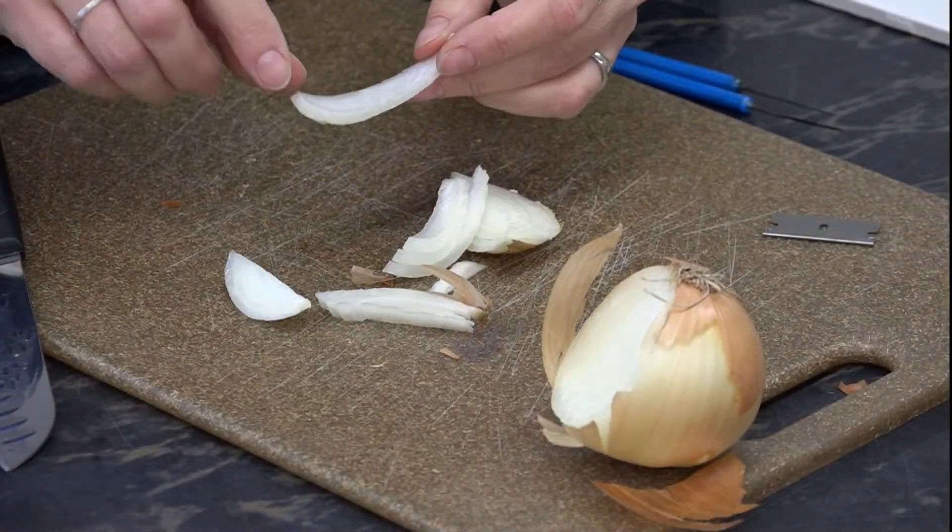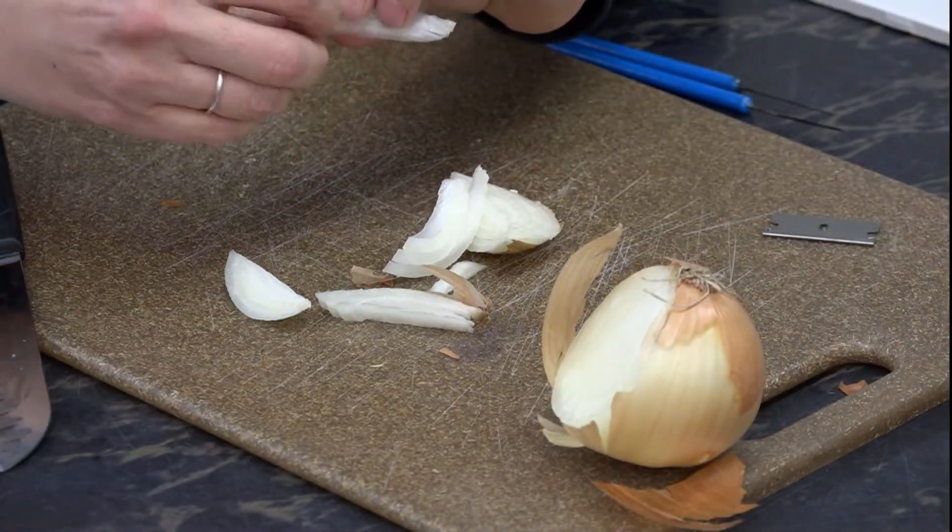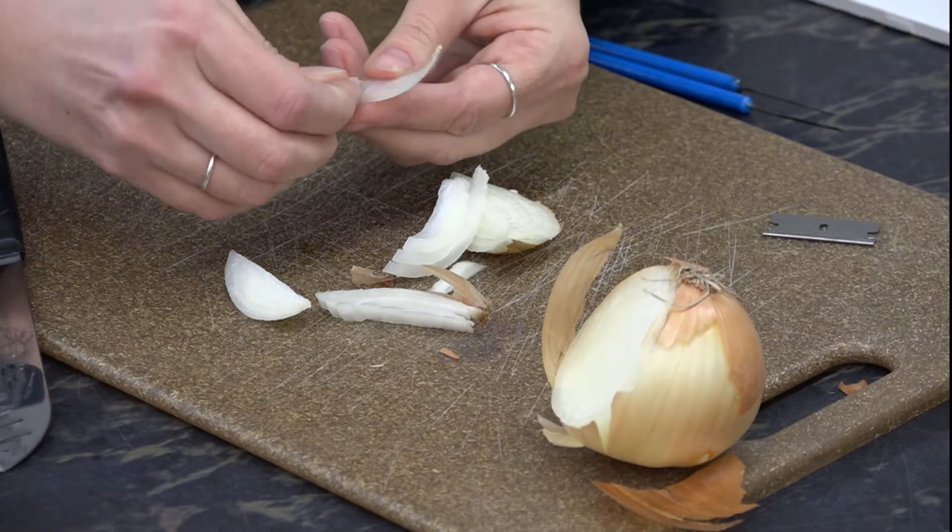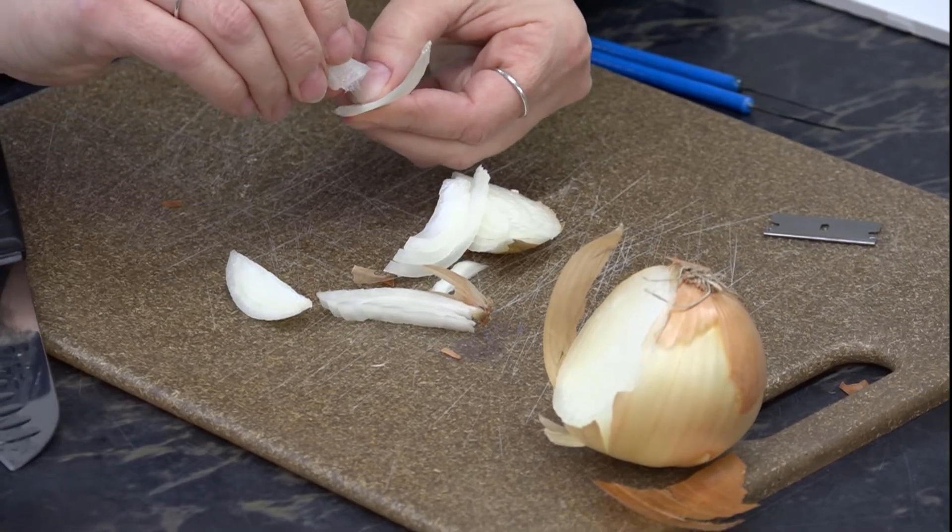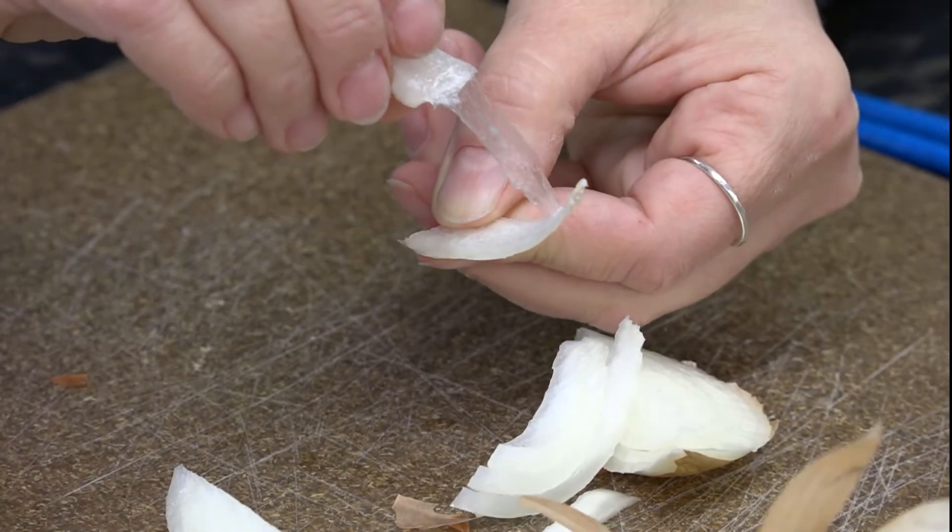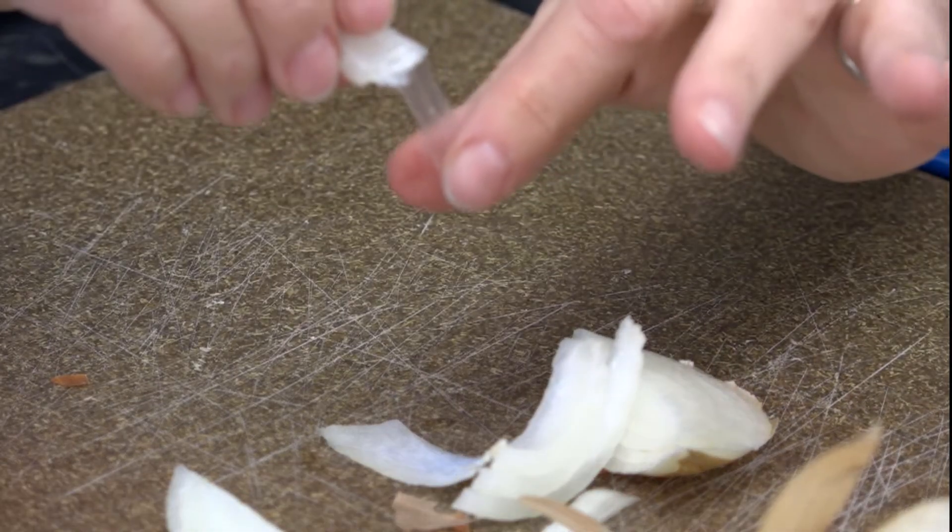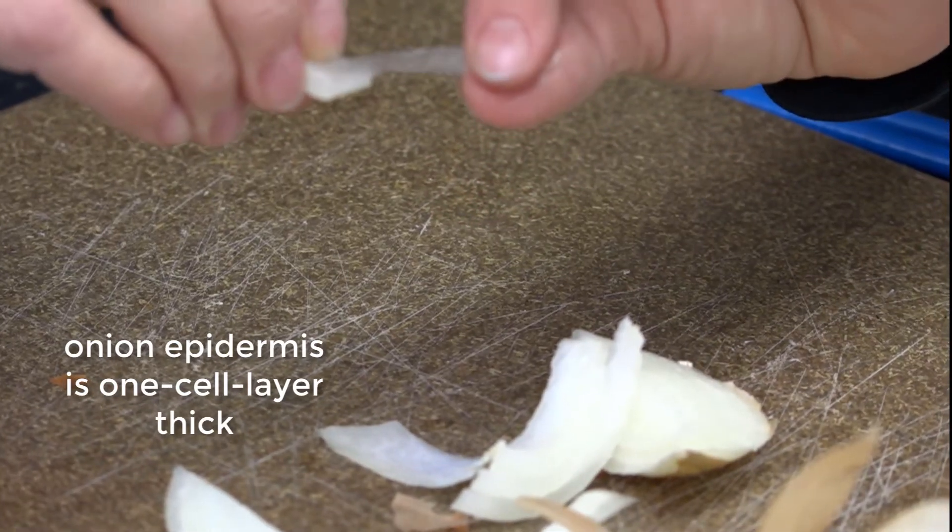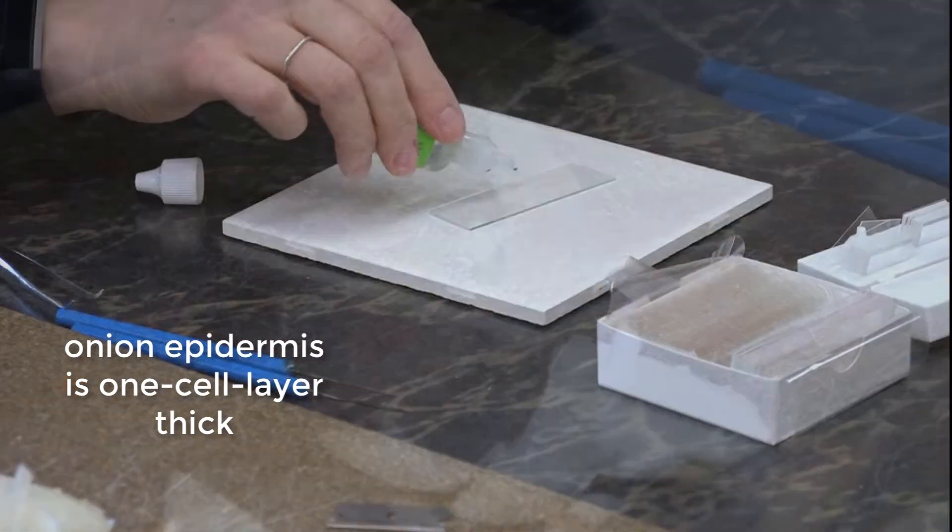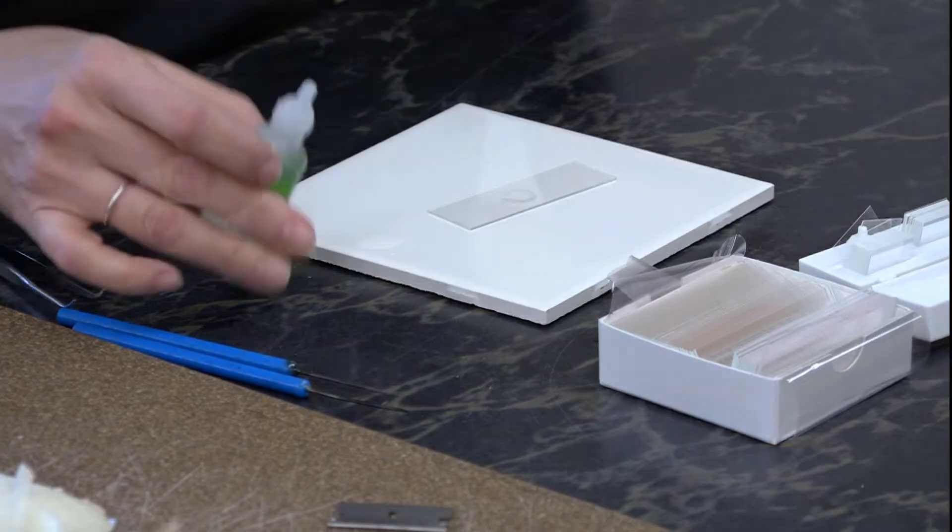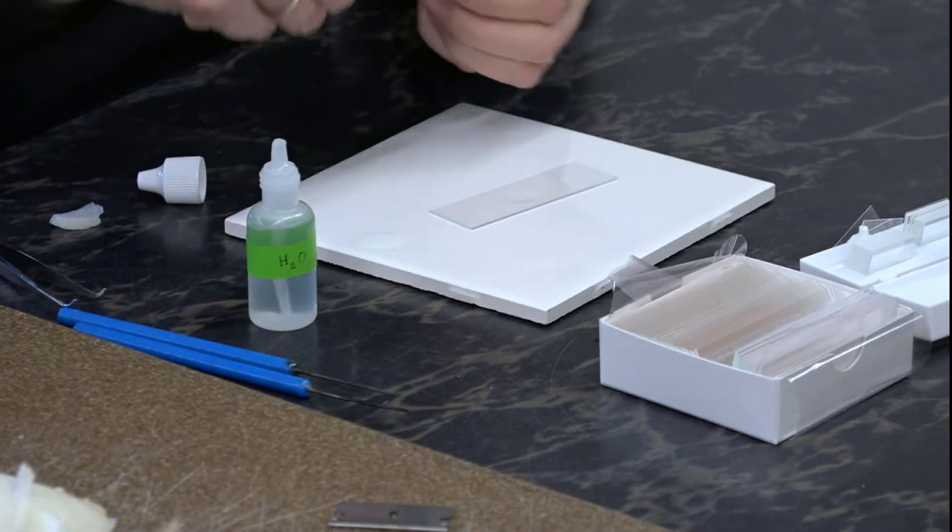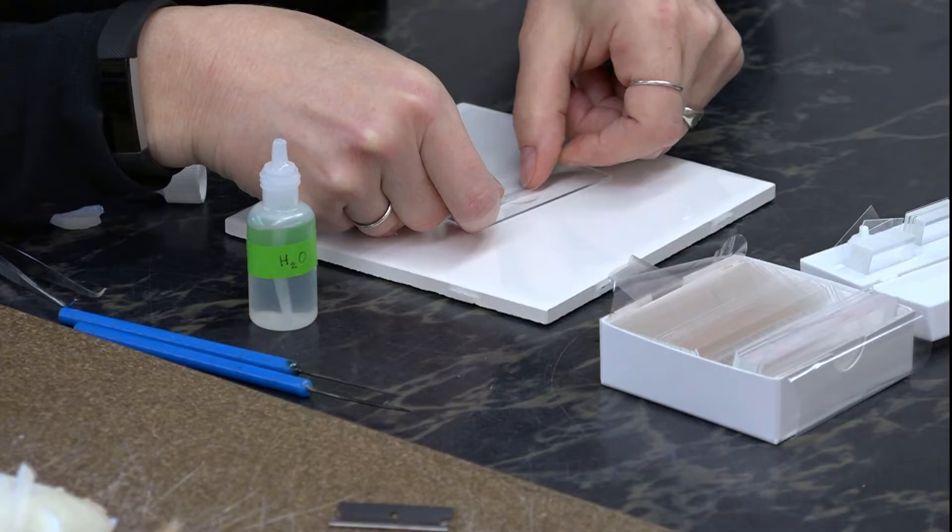What you can do is snap it and peel. This epidermis is one cell layer thick. That's what we want to put on our slide. I'm going to put a drop of water there. Lay your onion epidermis on your slide.